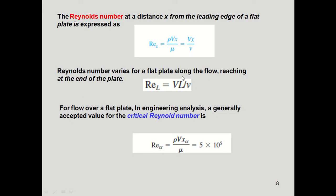The Reynolds number varies along the flat plate, reaching its maximum at the end. The total Reynolds number for the flat plate is Re_L = VL/ν. The critical Reynolds number, where laminar flow converts to turbulent, is Re_critical = ρV·x_critical/μ. For a flat plate this value is 5 × 10⁵. If the Reynolds number exceeds this value the flow is turbulent; if it is below this value the flow is laminar.